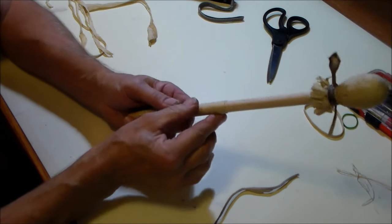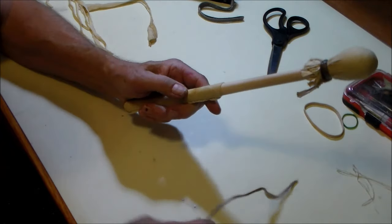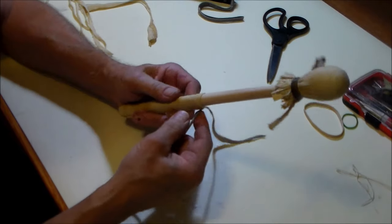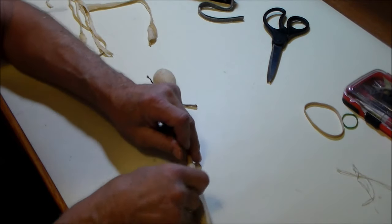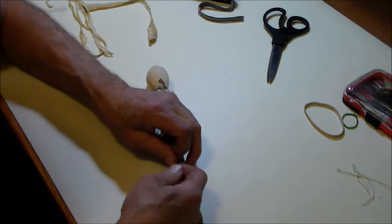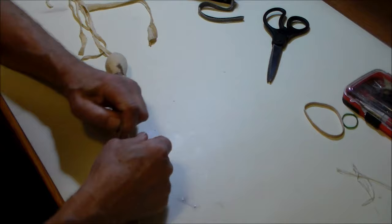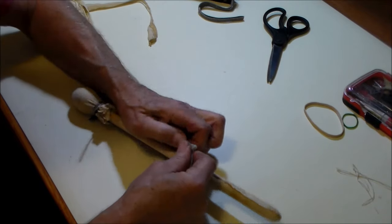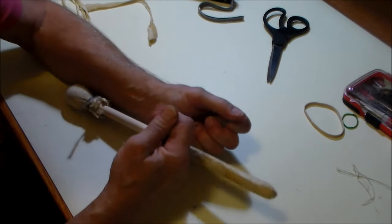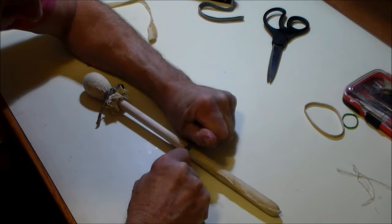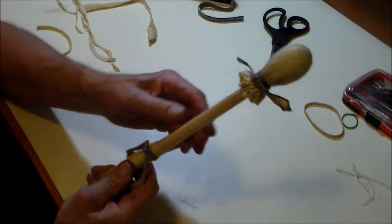Right here is the groove that I filed and a piece of rawhide. I'll wrap this in the groove and tie it. When it dries I'll trim it.